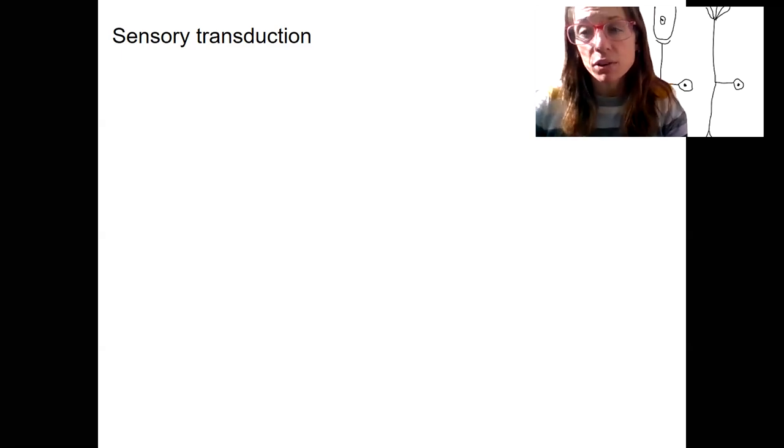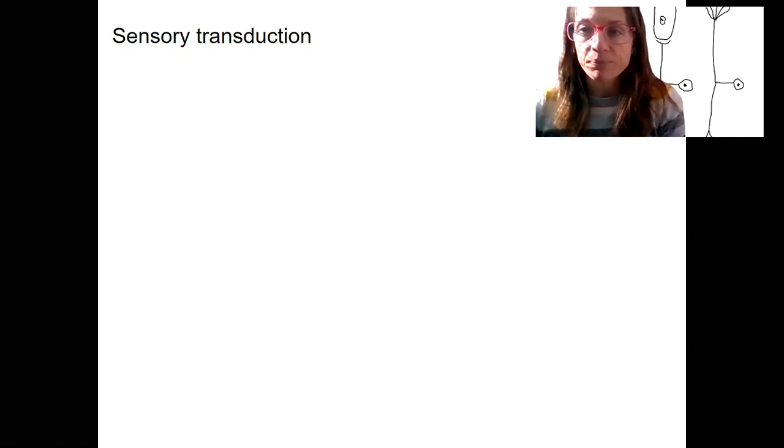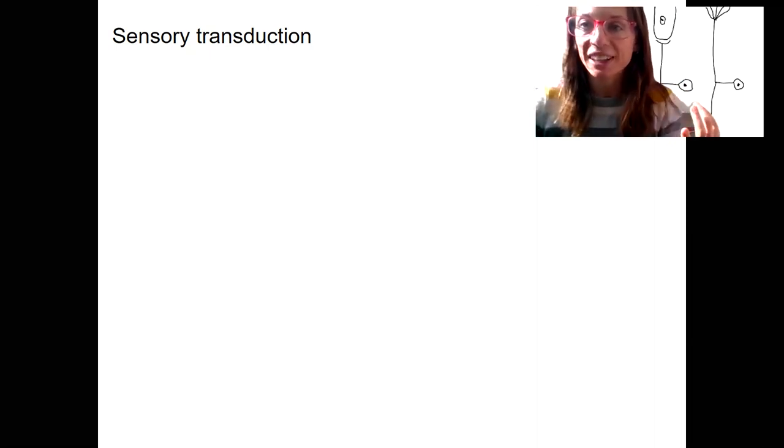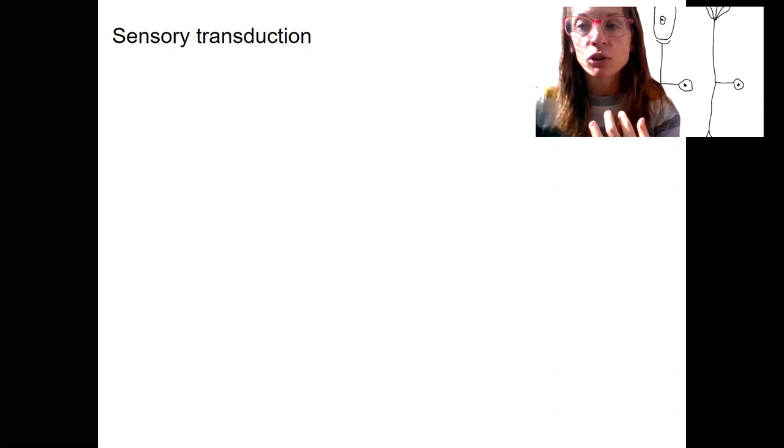Any of those stimuli need to be interpreted by your nervous system. For that to happen, the signal needs to be transduced, which means converted into a way that your body can understand it. So light is only sensed by our bodies because our neurons are able to convert light to a neural stimulus that eventually travels to our brain.